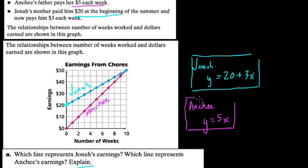So if she was working one week, it would be 5 times 1. Two weeks, 5 times 2. Ten weeks, 5 times 10, and so forth. Whereas Jonah would be times 3, and then plus 20. In other words, it's $3 for every week plus the $20 he made initially. That's how much earnings she has in total.